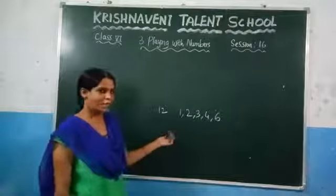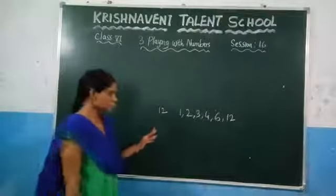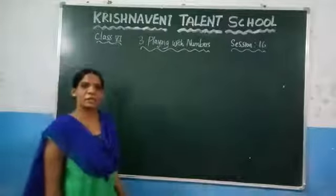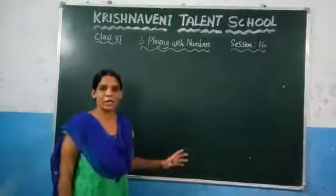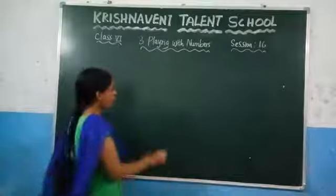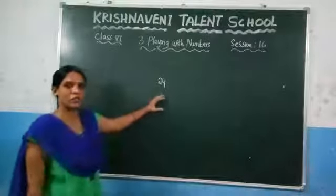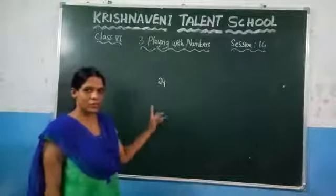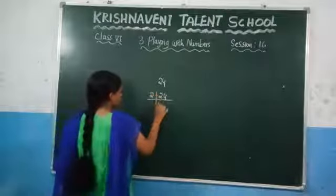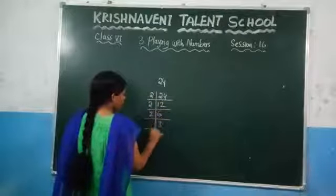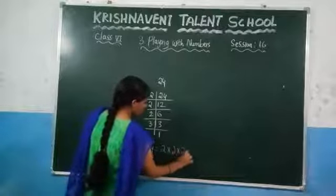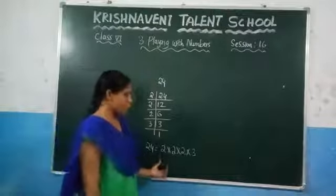And after that, we discussed what is meant by prime factorization. If you have given any number, you can write that number as a product of the prime factors. There are two methods: one is the prime factorization method, and the next one is the factor tree method. For example, consider 24. If you want to write 24 as a product of prime numbers using the prime factorization method: 2 × 12 = 24, 2 × 6 = 12, 2 × 3 = 6. So you can write 24 as 2 × 2 × 2 × 3.